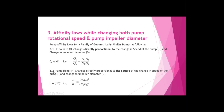For relationship 3.2: pump head H changes directly proportional to the square of the change in speed of the pump and change in impeller diameter. H is directly proportional to (N × D)², so H1/H2 = (N1 × D1)²/(N2 × D2)².